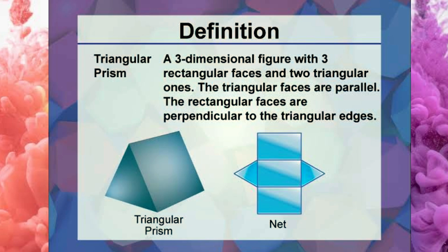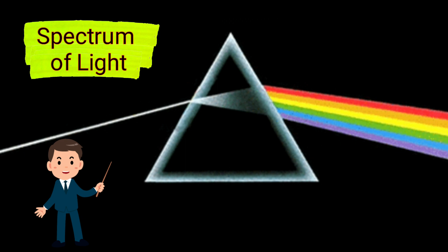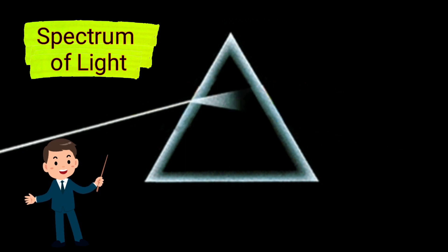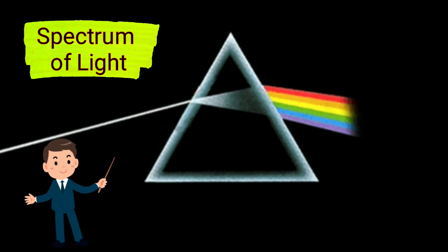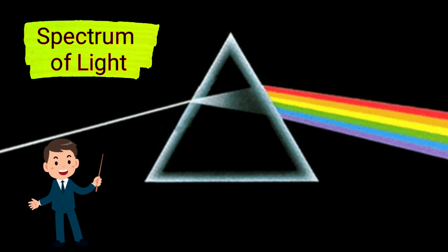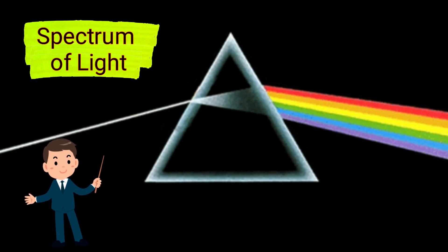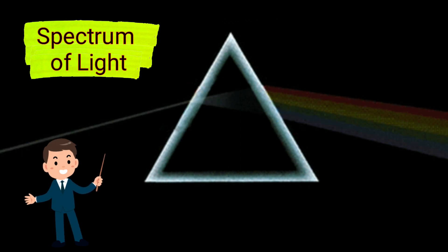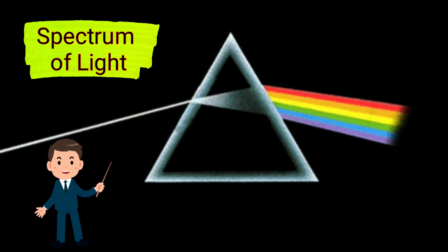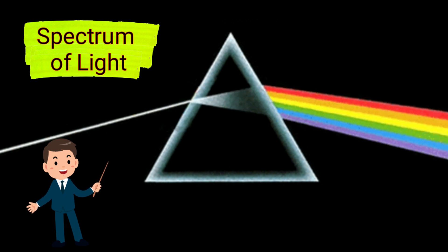This is what we mean by a triangular prism. So when a white light is passed through such a triangular prism, it splits up into its seven component colors. This phenomenon is referred to as dispersion of light and the band of seven colors that we obtain is known as the Spectrum of Visible Light.